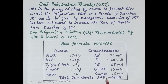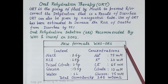In the human body, plasma osmolarity is 285 milliosmol per liter. This ORS — oral rehydration solution — is a simple, cheap, and effective treatment for diarrhea-related dehydration.